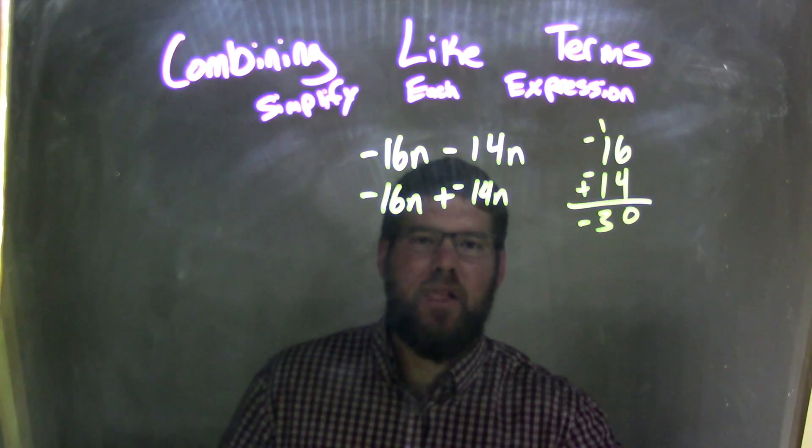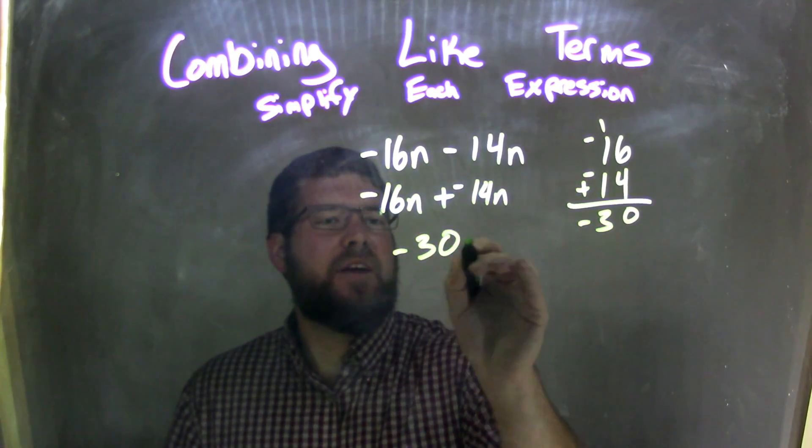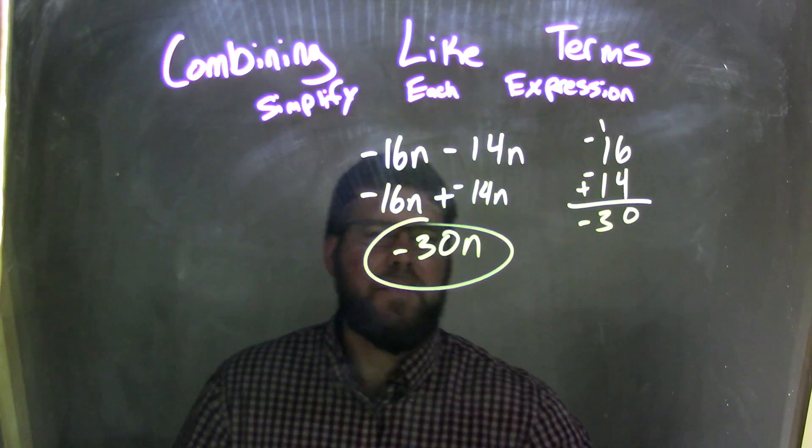So we have a negative 30. My final answer here is just negative 30n. There we go.